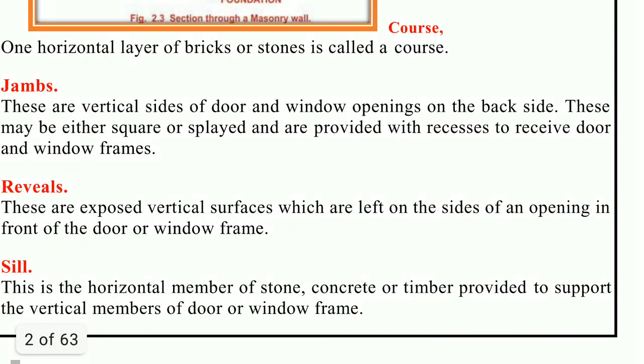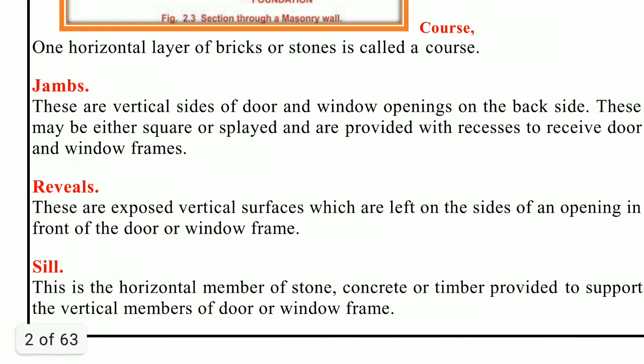Next, throating. A groove is provided on the underside of sill, cornice, and coping so that the rainwater can be discharged clear of the wall surface. This is known as throating.